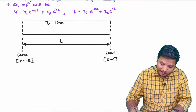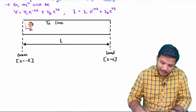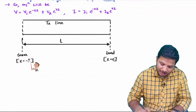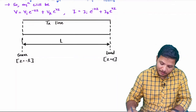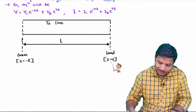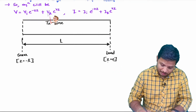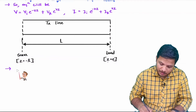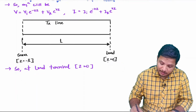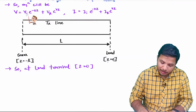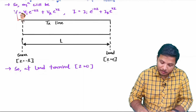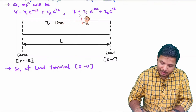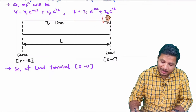If I want to calculate source voltage and source current, I place z equals minus L in the two equations. If I want to calculate load voltage and load current, I place z equals 0 to obtain VL and IL. At the load terminal, placing z equals 0, the load voltage becomes VL equals Vi plus Vr, and load current IL equals Ii plus Ir.